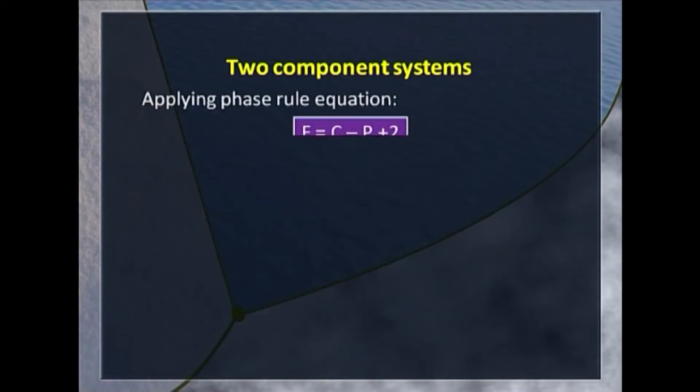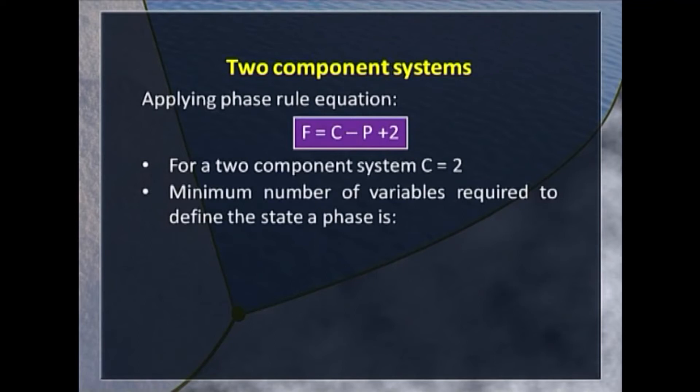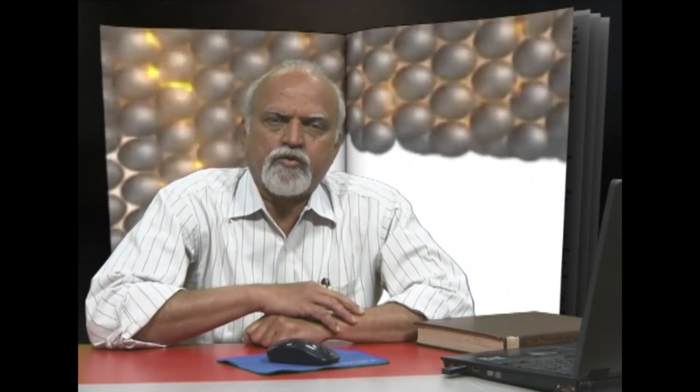We can apply the phase rule equation to two-component systems and see what we get. This is the equation: F equals C minus P plus 2. For a two-component system, C is of course 2. We want to find out the minimum number of variables required to define the state of a phase. For that, we put P equals 1. Then F works out to be 3. That means we require three variables to define the state of a phase.